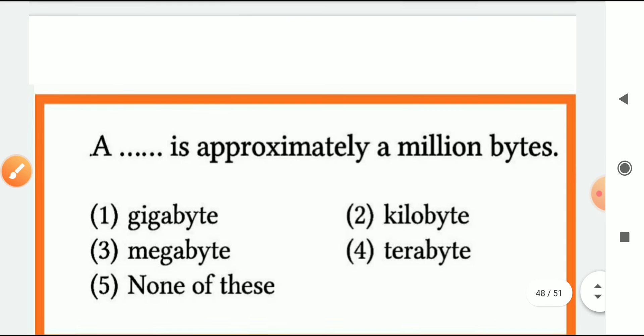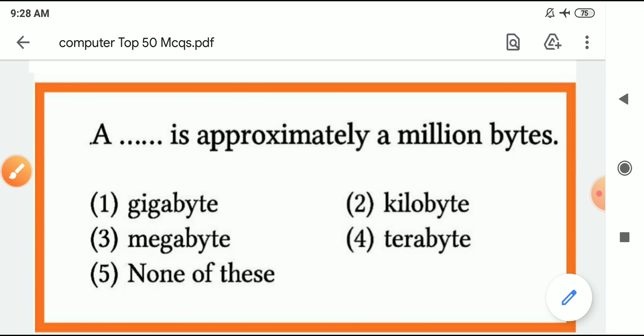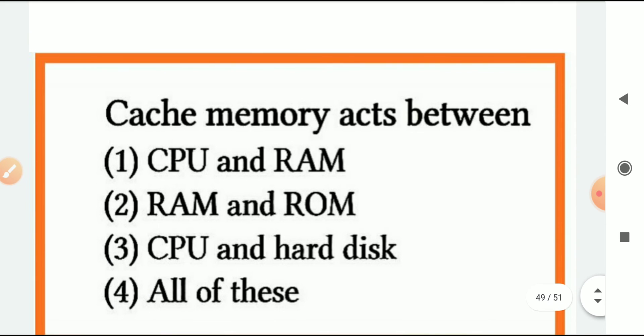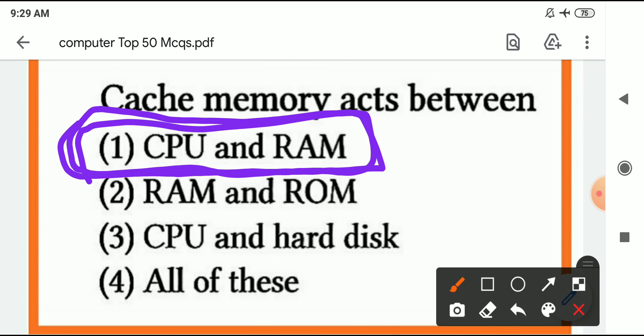Which is approximately millions of bytes? 1 million bytes - that is megabytes, MB. MB has millions of bytes. Cache memory acts between - cache memory is very important. Cache memory is in between the CPU and RAM. Between primary memory RAM and CPU is cache memory.